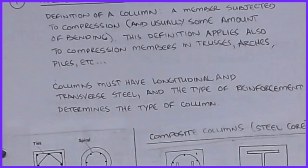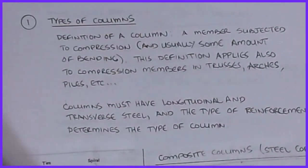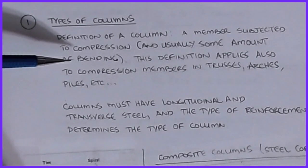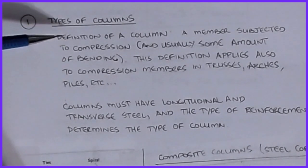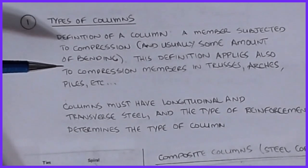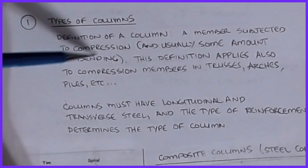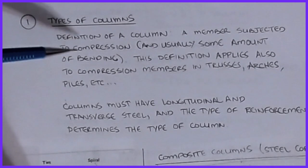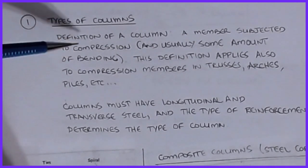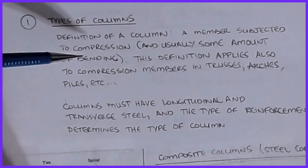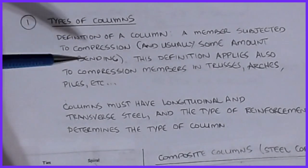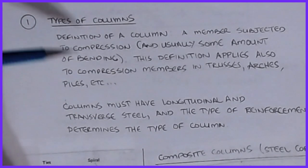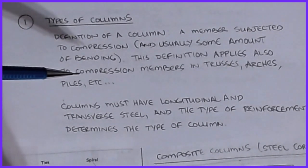Columns are classified based on how they're built. A column is a member subjected to compression — usually vertical with some substantial length. Generally, other than just compressive forces, a column almost always has some bending associated with it, so in a building a column nearly always has moments in different directions simultaneously with the axial load. We'll look at things like slender versus short stiff columns.